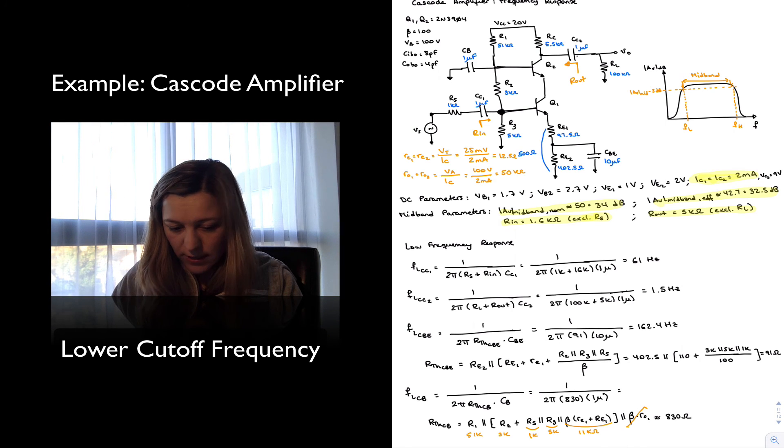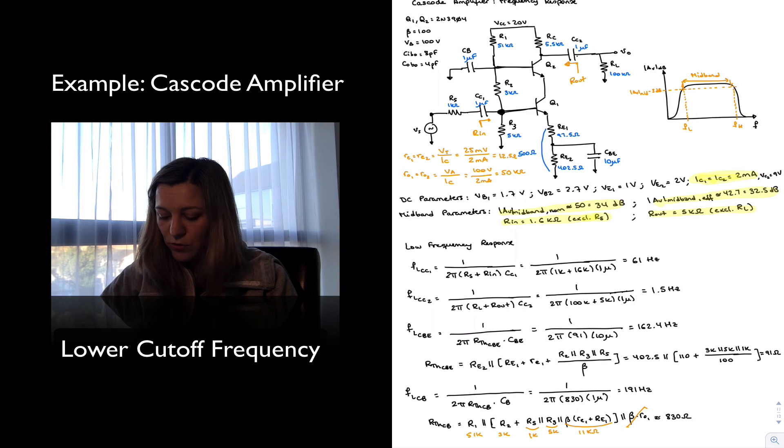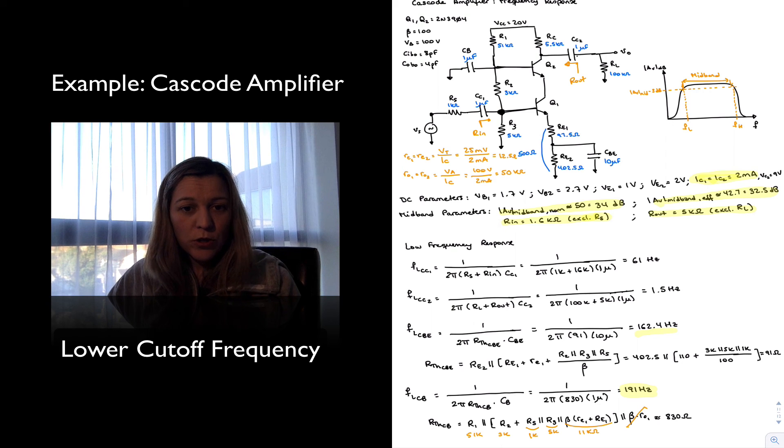And so when I look at the four frequency values, 61 Hertz, 1.5 Hertz, 162 and 191, I can see that 191 is the dominant. Now notice that 162.4 is fairly close to it. And so we expect that we are going to incur a larger error than typical when I approximate my low corner frequency as being 191.